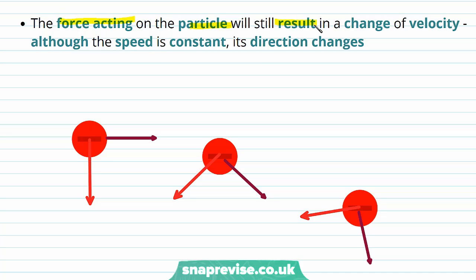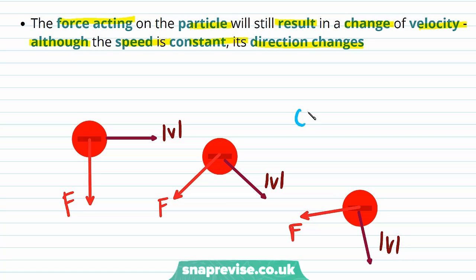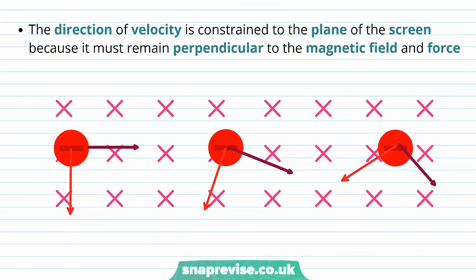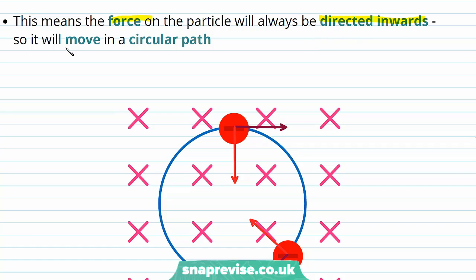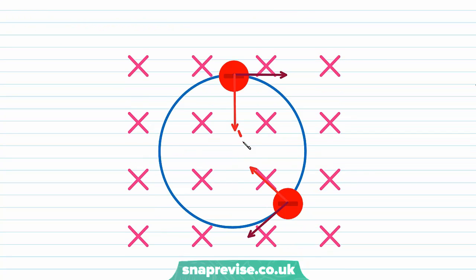However, the force acting on the particle will still result in a change of velocity. Although the speed is constant, its direction is going to change. The force causes the direction of motion to change while the speed remains constant. The direction of velocity is constrained to the plane of the screen because it must remain perpendicular to the magnetic field and force. Since the force on the particle is always directed inwards, it will move in a circular path. This is how we are able to trap charged particles in a certain region, which is used in particle accelerators.